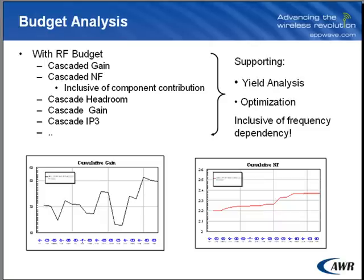So, unlike a traditional spreadsheet, VSS-RFA handles circuit-based and file-based models. The RF Budget tool can be used to calculate cascaded gain, noise figure, IP3, etc. And the RFA tool supports yield analysis, optimization, inclusive frequency dependency, as well as image noise.